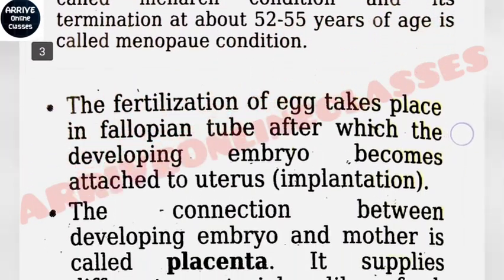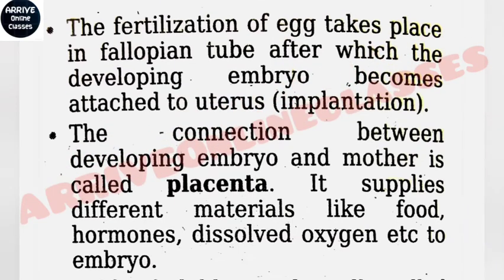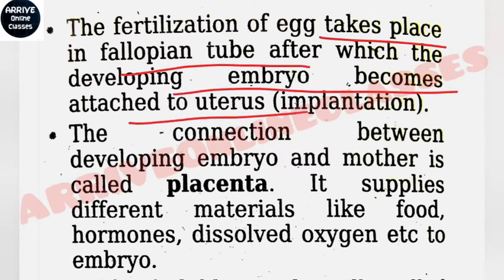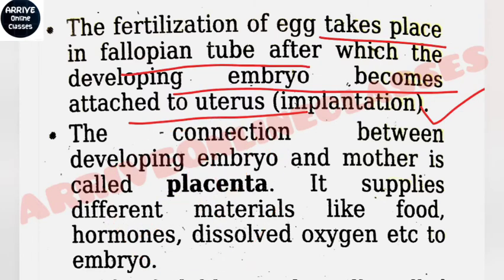The fertilization of the egg takes place in the fallopian tube, specifically in the ampulla region, after which the developing embryo becomes attached to the uterus. This process is called implantation.